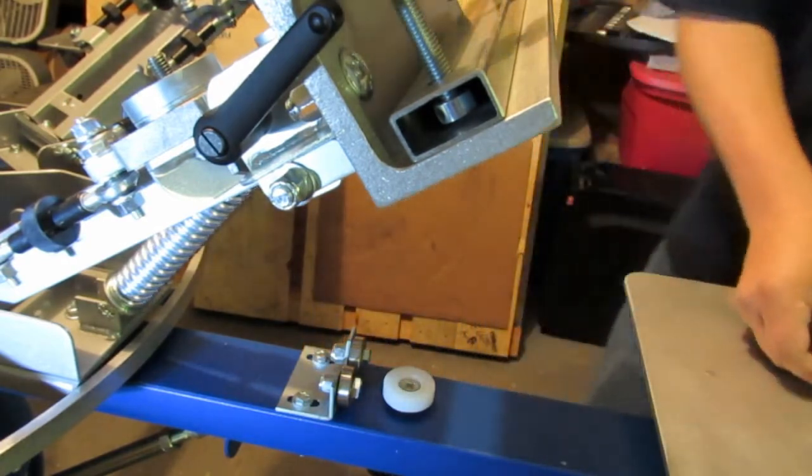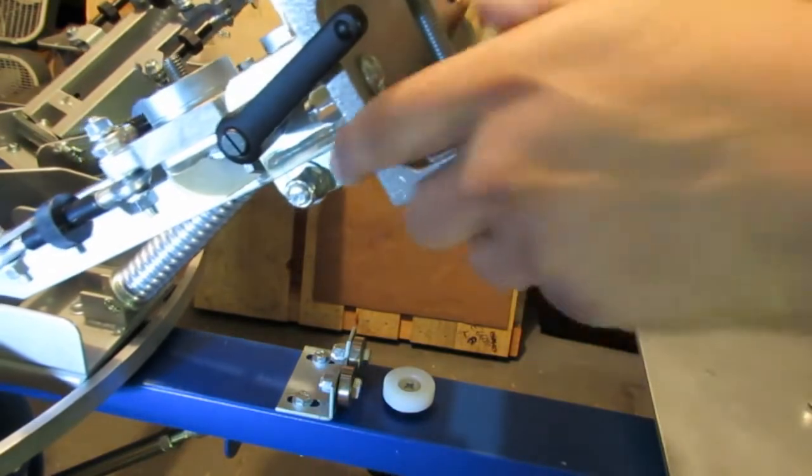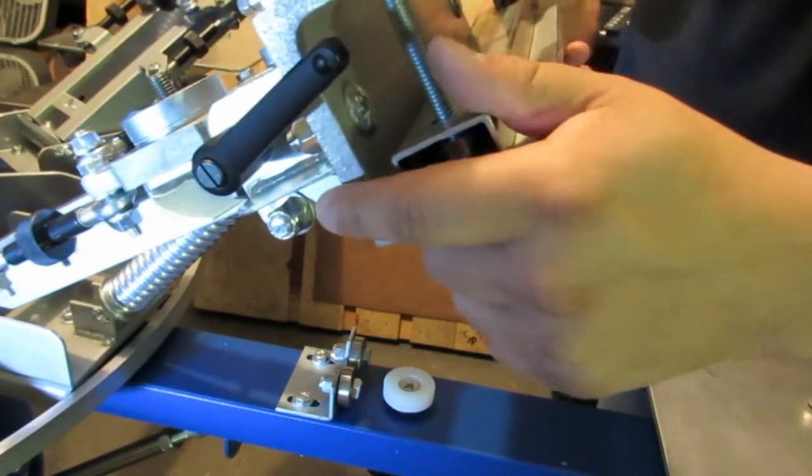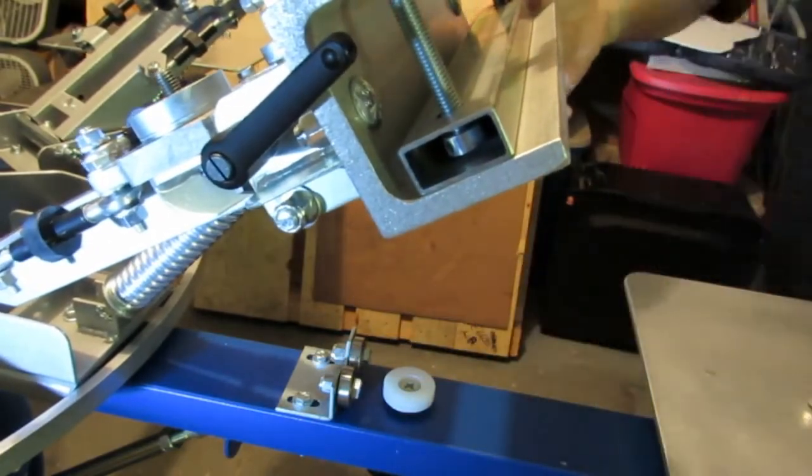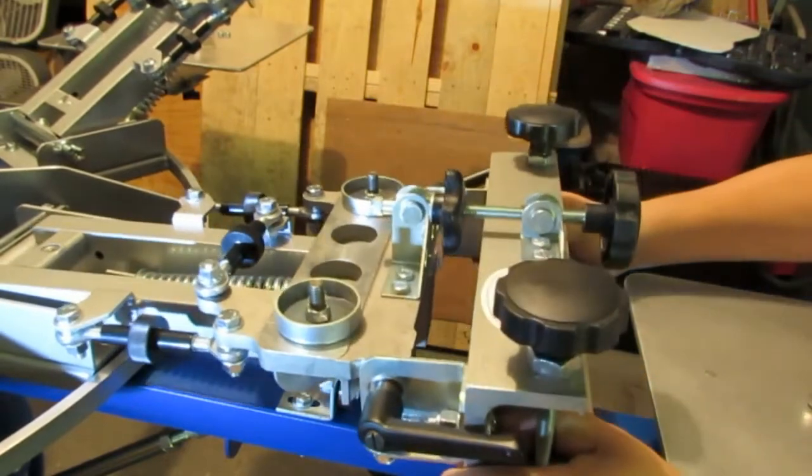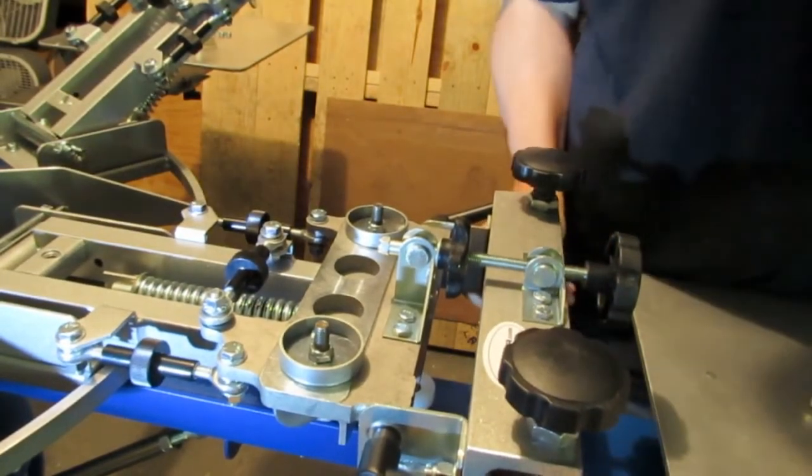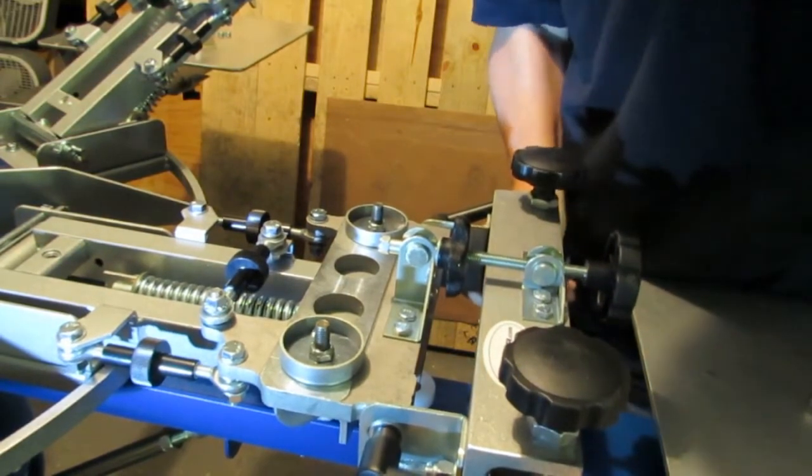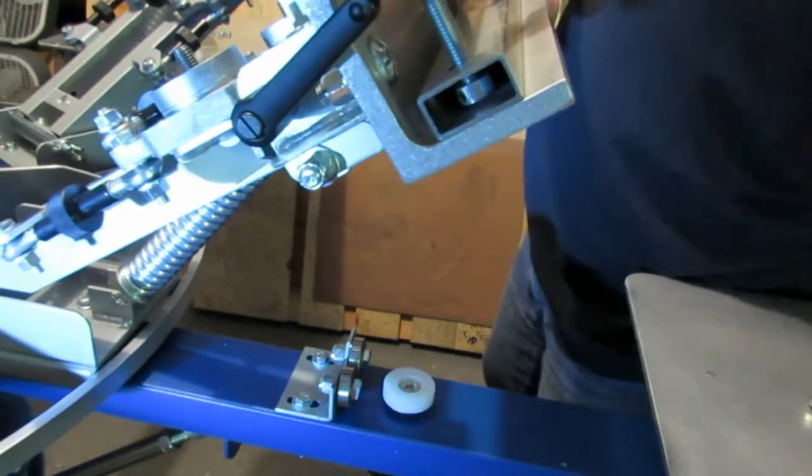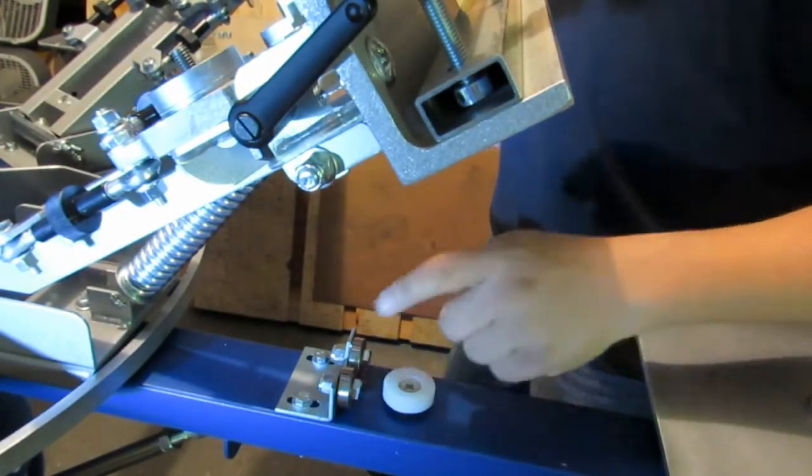And that's good. Now we're going to test the printhead again—I mean the registration key—and we're going to try and fit it into the slot here. Perfect, it's a perfect fit. There is no movement. And that's what we want, so we're going to do that for the rest of the arms, the same process.